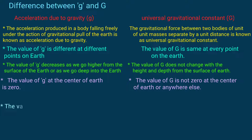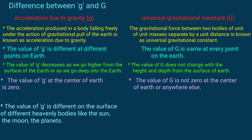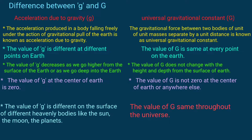The value of g, that is acceleration due to gravity, is different on the surface of different heavenly bodies like the sun, the moon, and the planets. The value of G, that is universal gravitational constant, is the same throughout the universe.